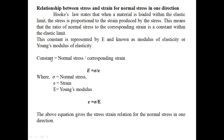The ratio of normal stress to the corresponding strain is a constant within the elastic limit. This constant is represented by capital E and is known as the modulus of elasticity or Young's modulus of elasticity. Mathematically, E equals sigma upon epsilon, where sigma represents normal stress and epsilon represents the corresponding strain. This can also be written as strain equals sigma upon E, that is, strain equals stress divided by Young's modulus of elasticity. This equation gives the stress-strain relationship for one-dimensional system.